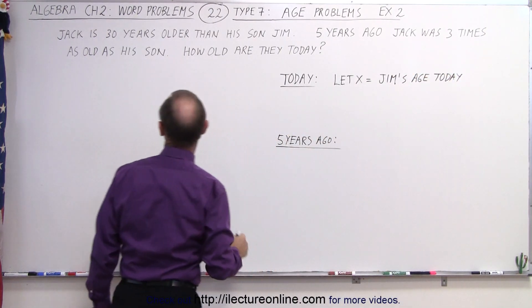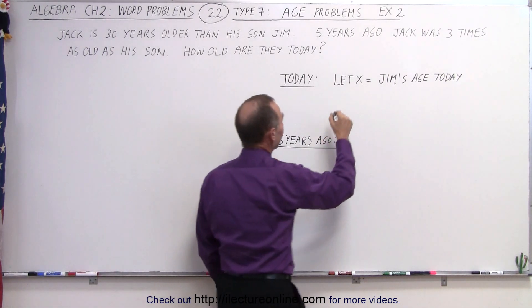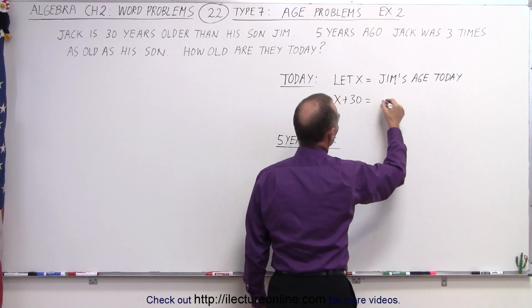And then we go and see that Jack is 30 years older today. So we can say that x plus 30 is Jack's age today.